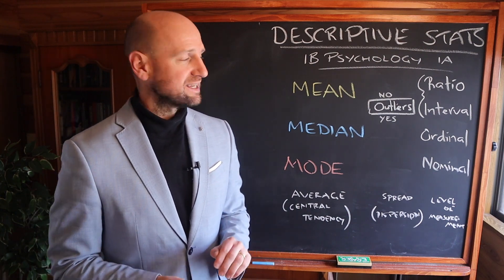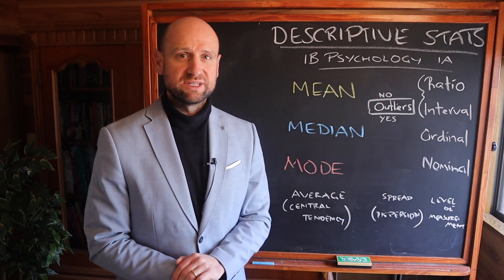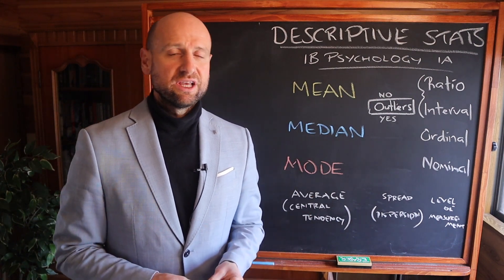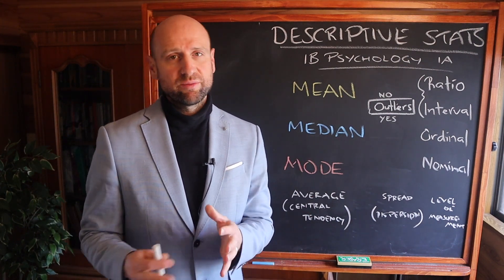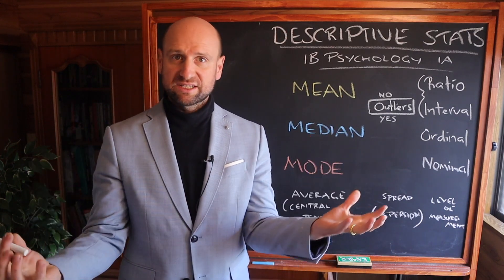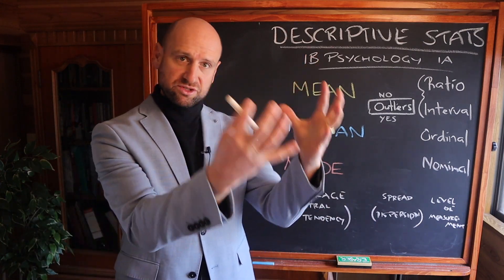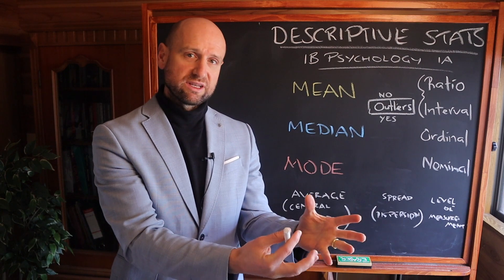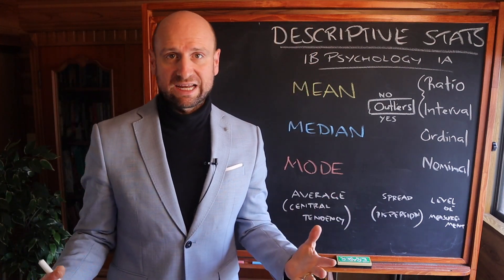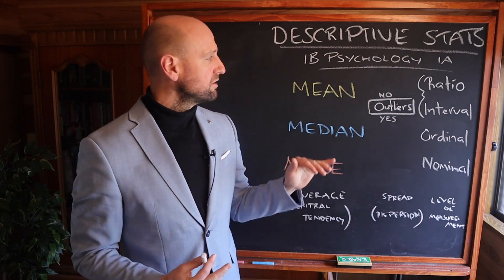The first question you're going to ask is: are you going to apply the mean, median, or mode to your data? What average are you going to use? You need to apply one of these. Remember, you've just done an experiment, you've got two sets of data — hopefully your experiment had two conditions — so you've got the results from one condition and the results from the other. Two columns of raw data. You now have to apply the average.